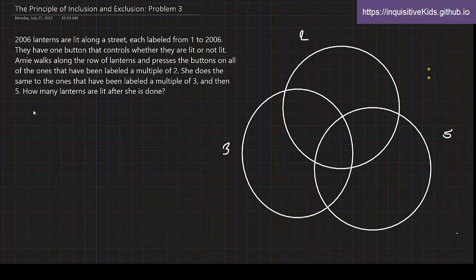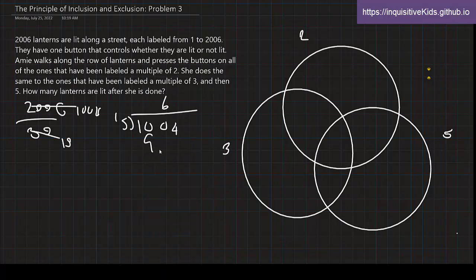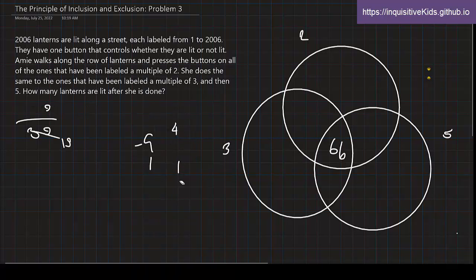First, we always find the middle part. The LCM of 2, 3, 5 is 30. And 2006 divided by 30 is 1004 divided by 15. This is 66, so we have 66 in the middle. And I'm going to erase this just so we have enough space.